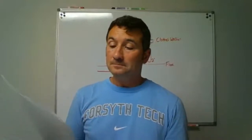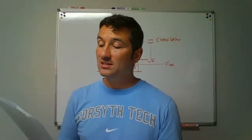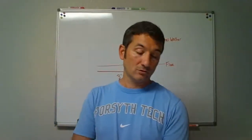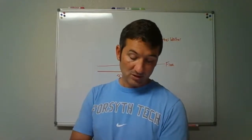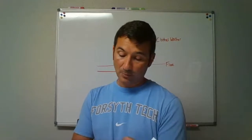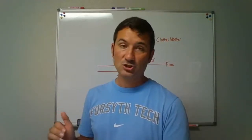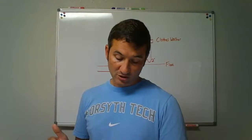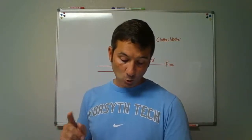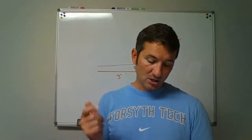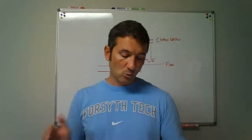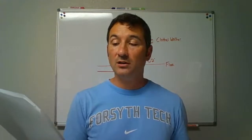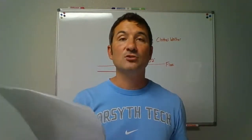Question 10: 21 inches of clearance is needed in front of a urinal — true or false? Section 405.3.1 on page 29: in front of water closets, urinals, lavatories, or bidets, there shall be not less than 21 inches of clearance to any wall, fixture, or door. So 21 inches of clearance is needed in front of a urinal — that is a TRUE statement.